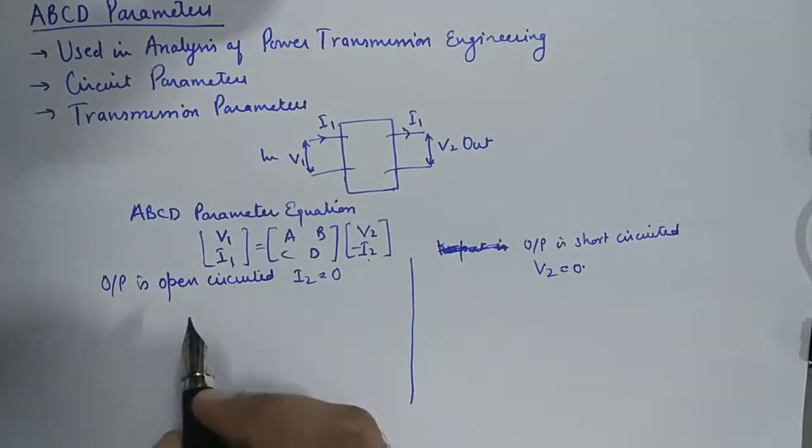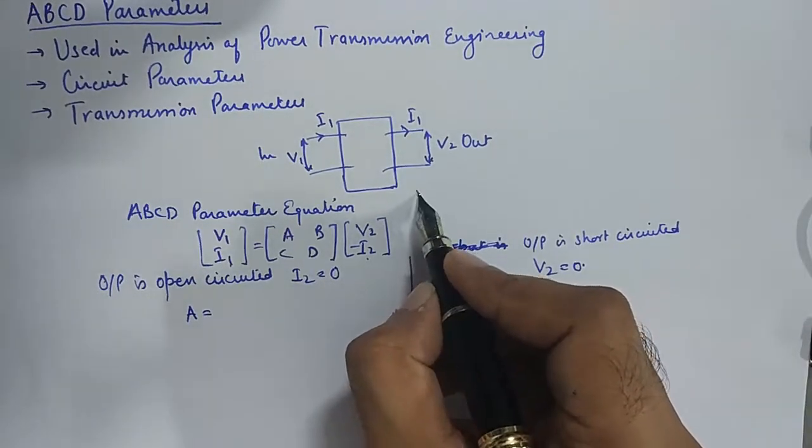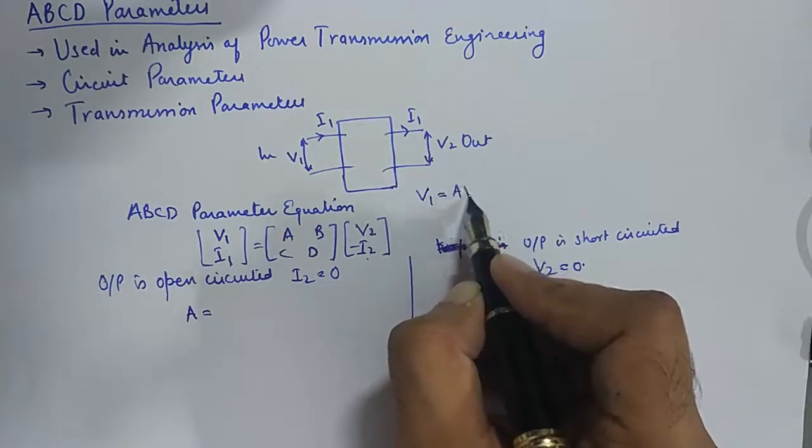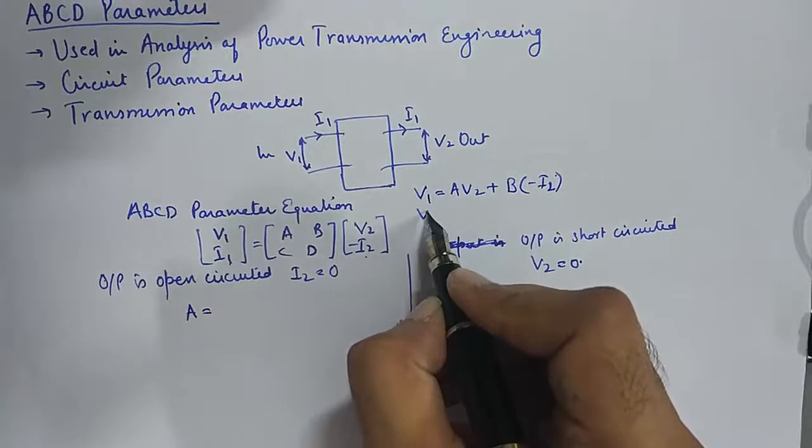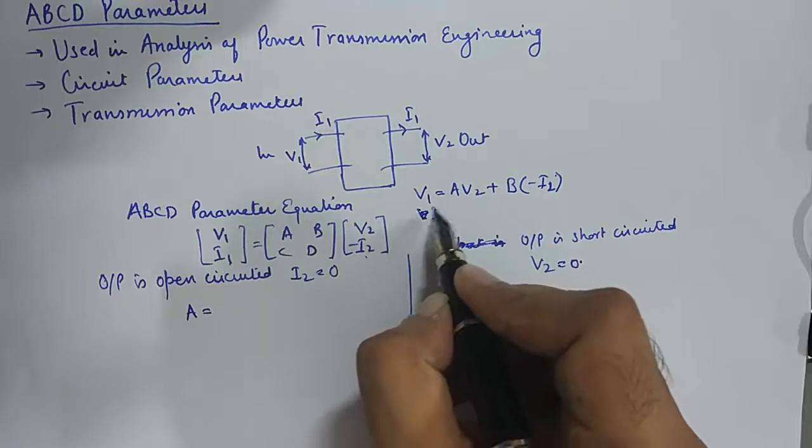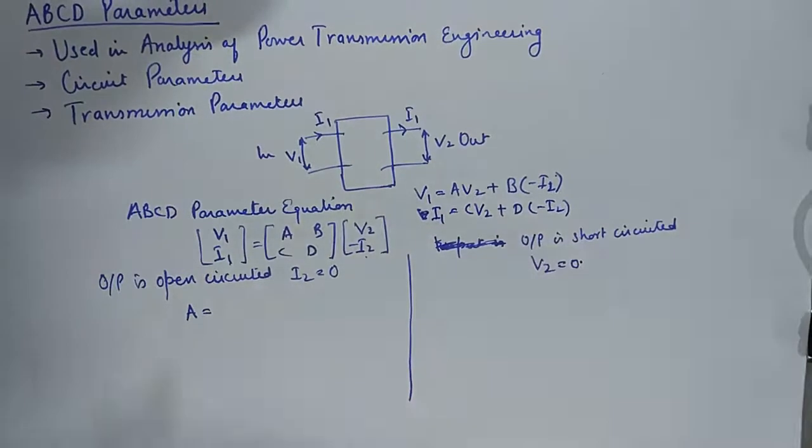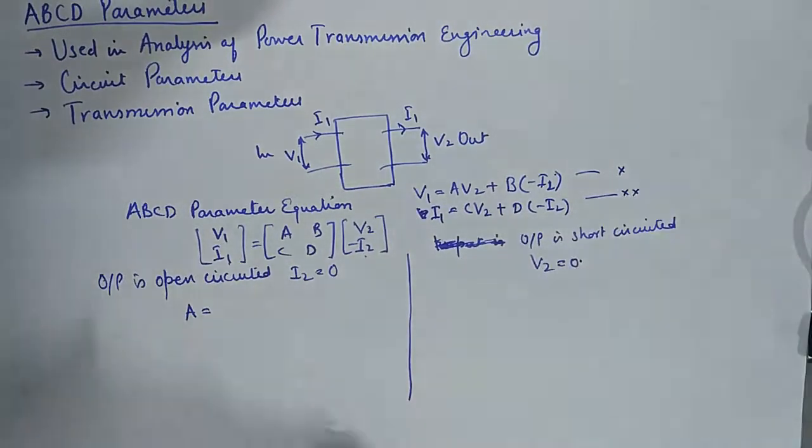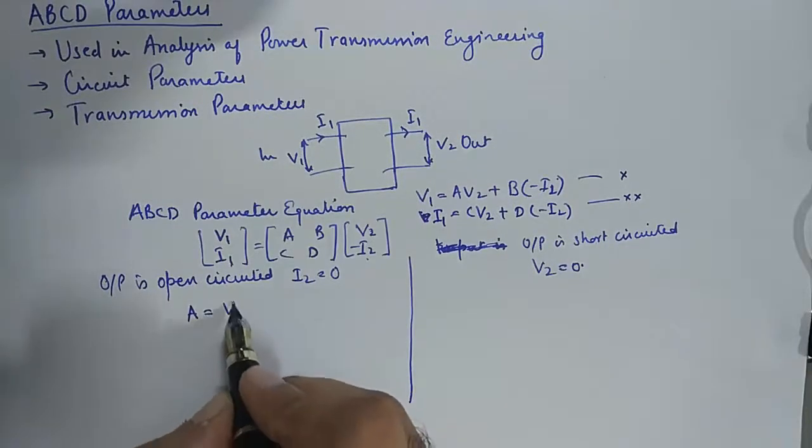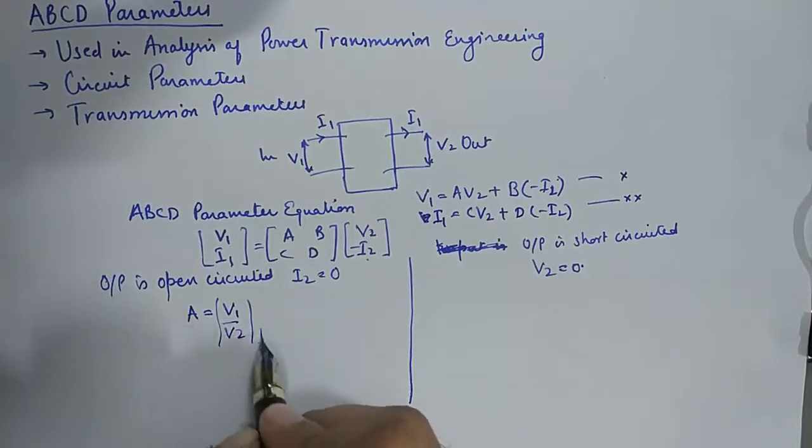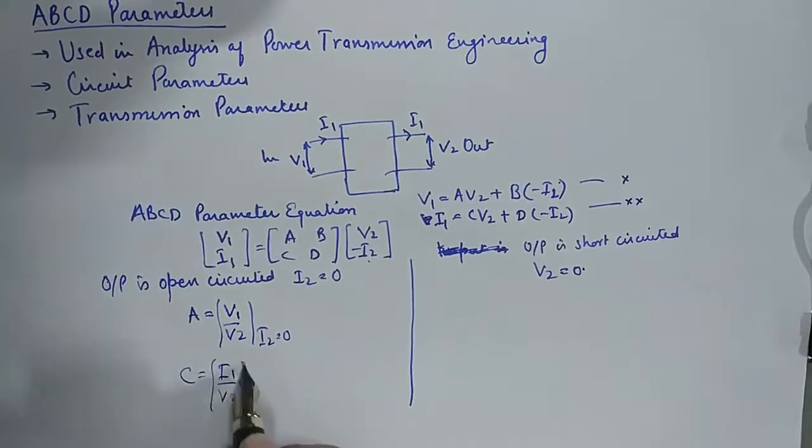So when we put I2 equal to zero, we get the value of A and C. You need to open this thing up first, so V1 becomes equal to A into V2 plus B into minus I2. I1 becomes C into V2 plus D into minus I2. These are the governing equations. Putting I2 equal to zero, we get A is equal to V1 upon V2 when I2 is zero, and C is equal to I1 upon V2 when I2 is zero.